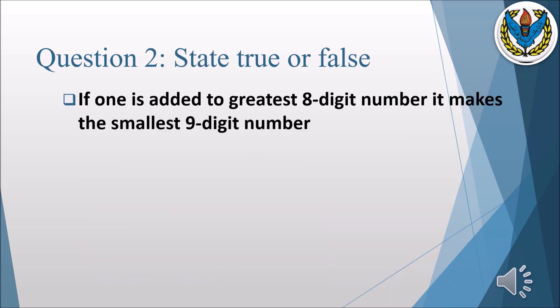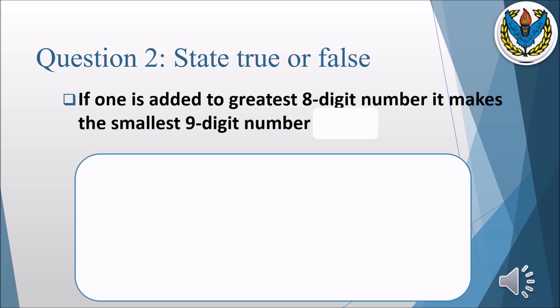Question number 2: state true or false. Part one: if 1 is added to the greatest 8-digit number, it makes the smallest 9-digit number. As you can see from the explanation, adding 1 to the greatest 8-digit number gives the smallest 9-digit number. So the statement is true.